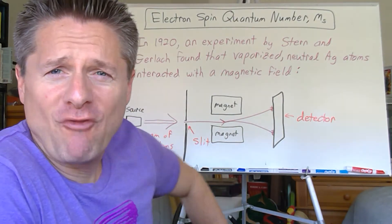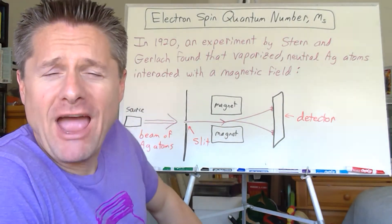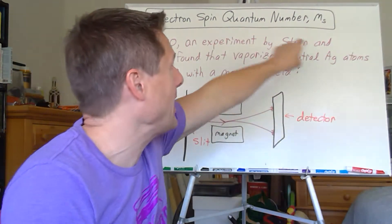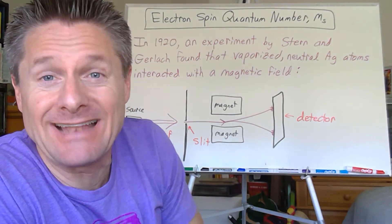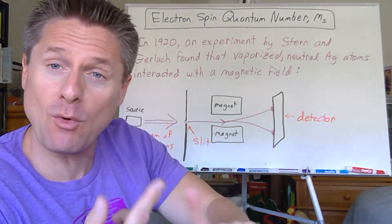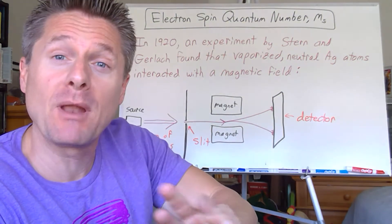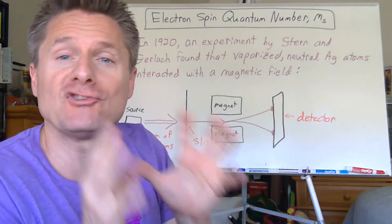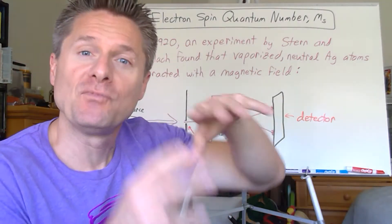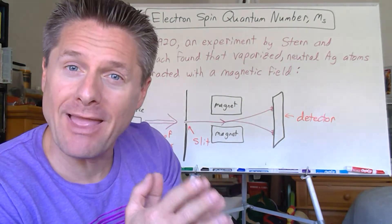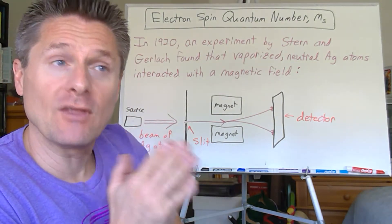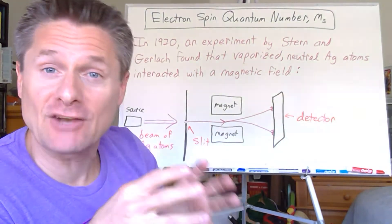Let's look at our fourth and final quantum number: the electron spin quantum number, m sub s. The first three — n, l, and m sub l — the principal quantum number, angular momentum quantum number, and magnetic quantum number — are all associated with an orbital. You have the energy level n, the sub-level l, the specific orbital m sub l.